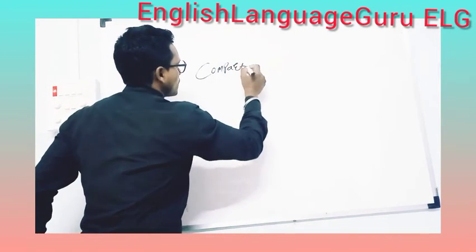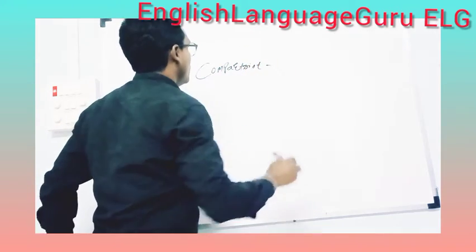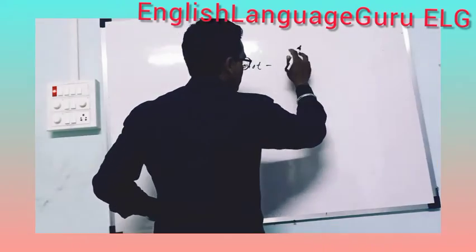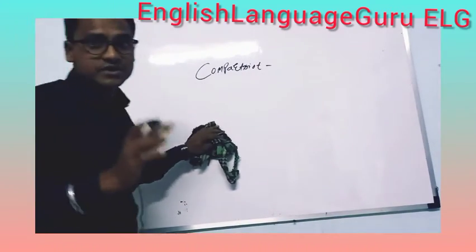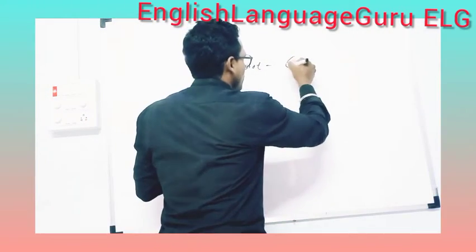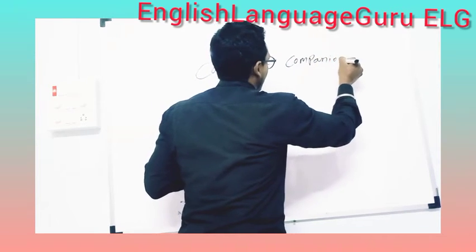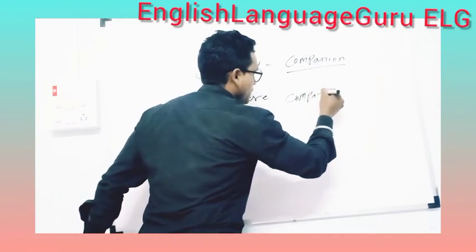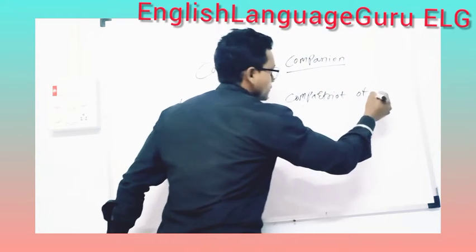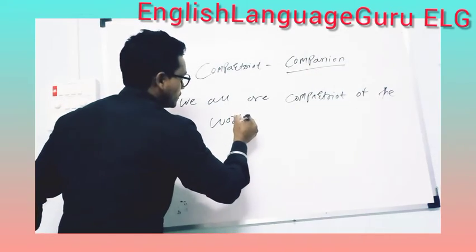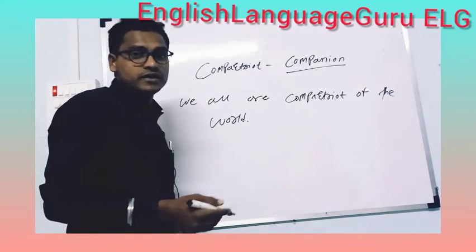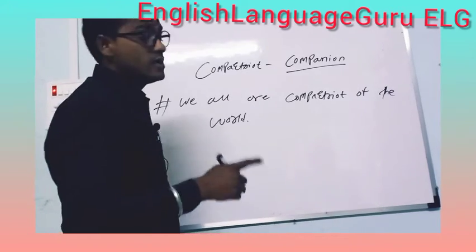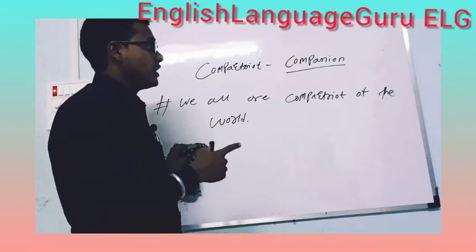The second word is 'compatriot.' If you are unable to see this word, you can refer to another word. Compatriot means a companion or a countryman. We are considering the word companion here — we are compatriots of the word, so to speak. It's like a more intelligent connection.